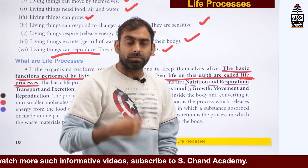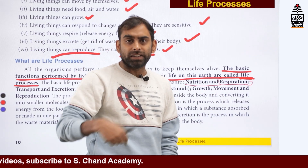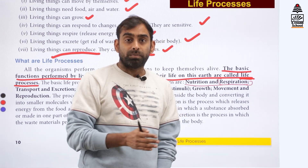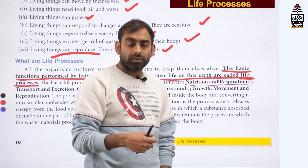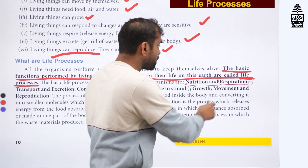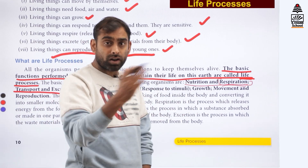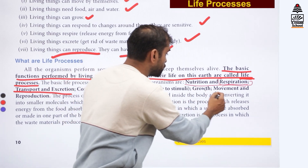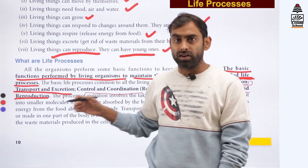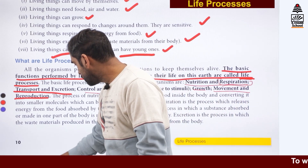Life processes basically include nutrition and respiration — what kind of food is being taken by plants or animals and how they make use of that food. Respiration doesn't limit to breathing; it is a broader process which includes utilization of food and oxidizing it with the help of oxygen to produce energy. Apart from that, we have transport of material, excretion, control and coordination — how we respond to stimulus — growth, movements, and reproduction. So this is quite a big chapter, but in this video particularly, we will be limiting ourselves to nutrition and how different organisms make use of the nutritional principles.